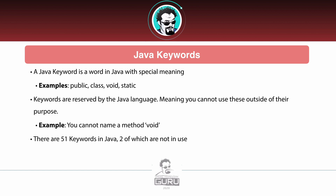These words are reserved by the Java language, meaning that you cannot use them outside of their intended purpose. For example, you cannot make a method called void — the Java compiler would reject that. Right now there are 51 keywords inside of Java, two of which are not in use, and then there are a couple of special cases with identifiers.